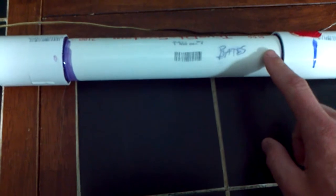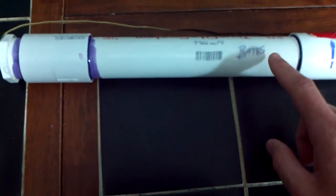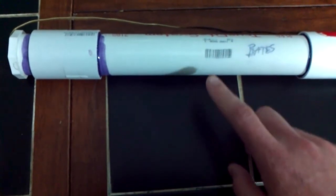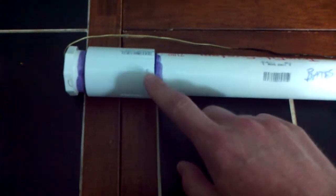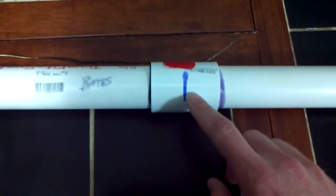Anyway, here there are four segments of Bates grains. They're two inches tall, inch and a quarter wide, three-eighths inch core going through them. And three-eighths, by the way, is also what the nozzle throat diameter is at about this line right here.